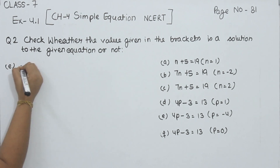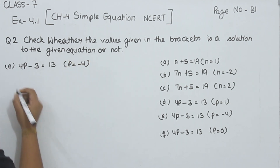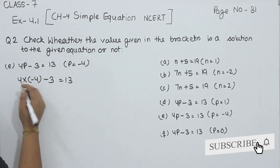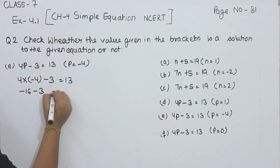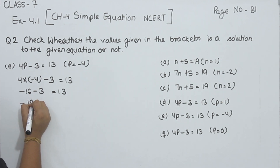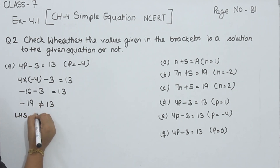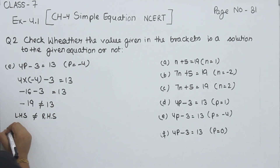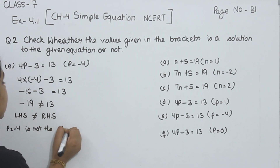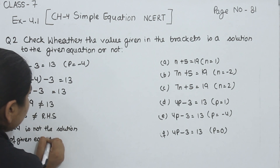Now part E. 4P minus 3 is equal to 13, where P is equal to minus 4. Now 4 multiplied by minus 4 minus 3 is equal to 13. That gives minus 16 minus 3; minus and minus gives minus, so minus 19. Now minus 19 is not equal to 13, so left hand side is not equal to right hand side. P is equal to minus 4 is not the solution of the given equation.